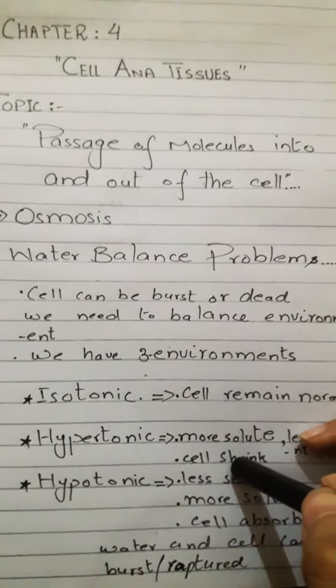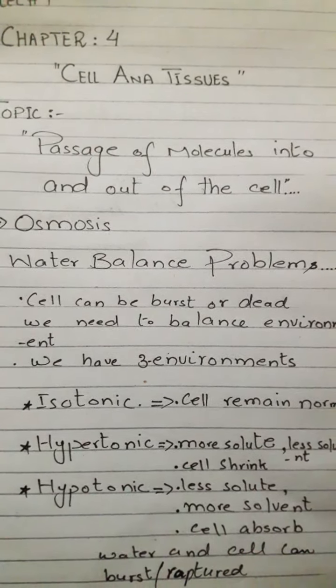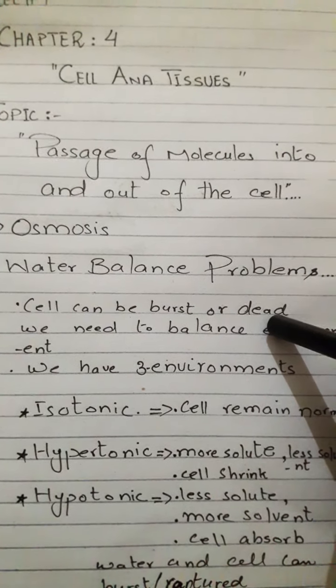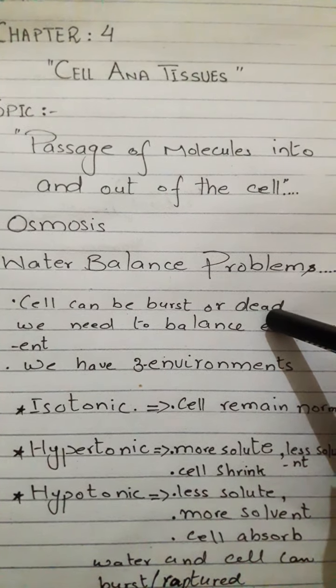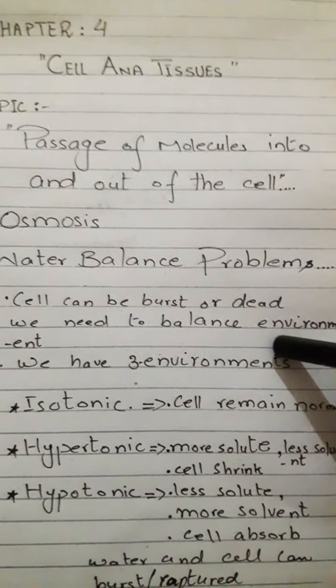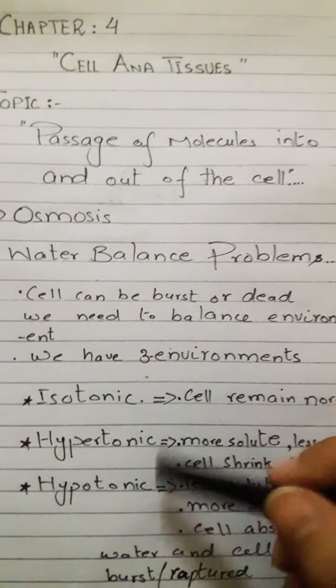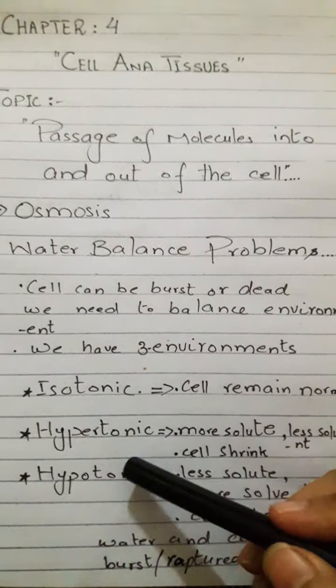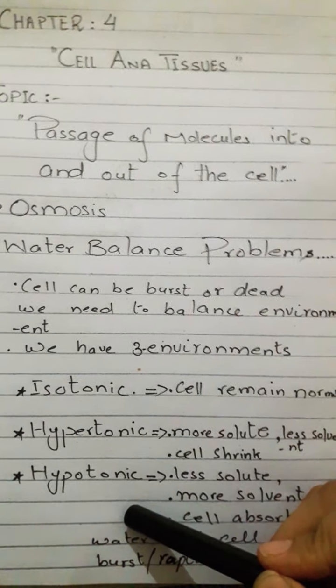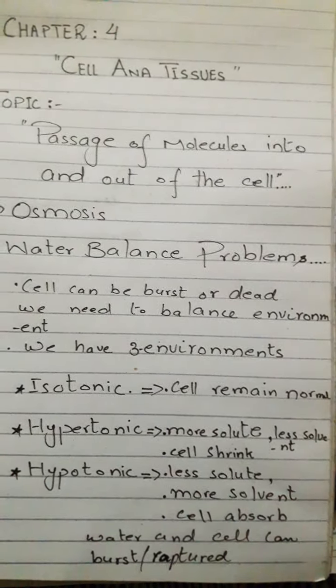These are the water balance problems which an animal cell, like a red blood cell, faces in three different environments: Isotonic, Hypertonic, and Hypotonic.